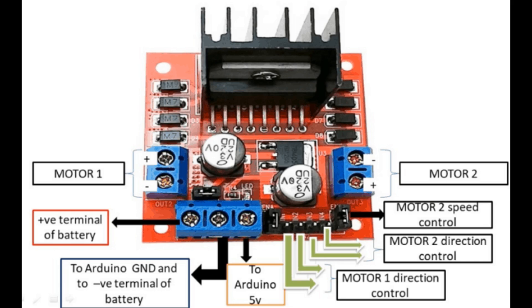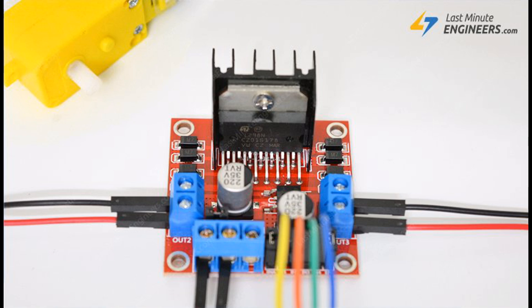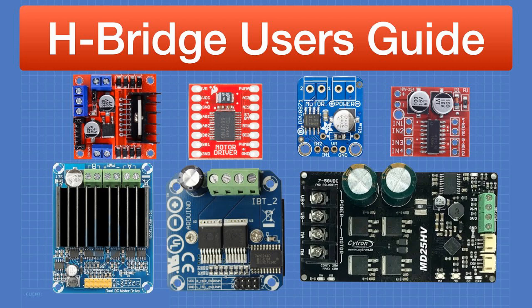For speed control, PWM (Pulse Width Modulation) is used by switching the transistors on and off rapidly. The average voltage supplied to the motor is varied, effectively controlling speed without reducing torque significantly, as full voltage is supplied in pulses. PWM can be applied to either the high side or low side transistors to control speed in either direction. For example, to rotate forward at half speed, Q1 and Q4 are turned on with PWM applied to Q1, rapidly switching it on and off to reduce average power. To rotate in reverse at full speed, Q2 and Q3 are simply turned on continuously. A critical safety note: turning on both Q1 and Q2, or Q3 and Q4, simultaneously creates a direct short between the power supply and ground — known as shoot-through — and should be avoided.